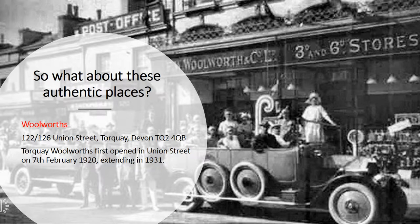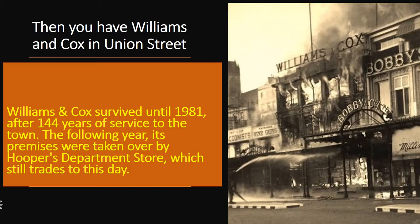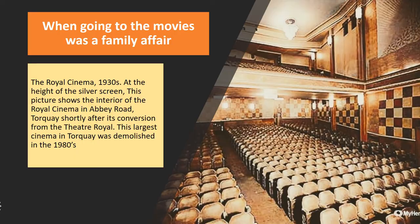Looking at these authentic places: Woolworths at 122–126 Union Street in Torquay first opened on the 7th of February 1920, extending in 1931. Williams and Cocks survived until 1981 after 144 years of service to the town; the following year its premises were taken over by Hooper's Department Store, which still trades to this day. The Royal Cinema in the 1930s — at the height of the silver screen — shows the interior shortly after its conversion from the Theatre Royal; this largest cinema in Torquay was demolished in the 1980s.